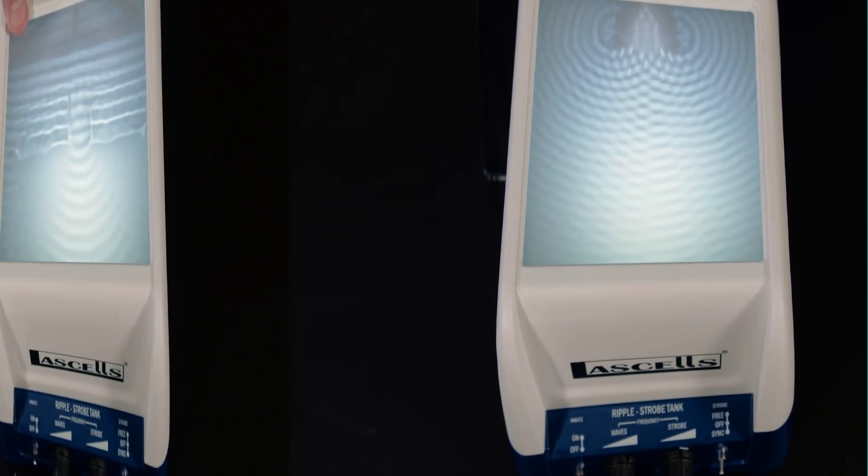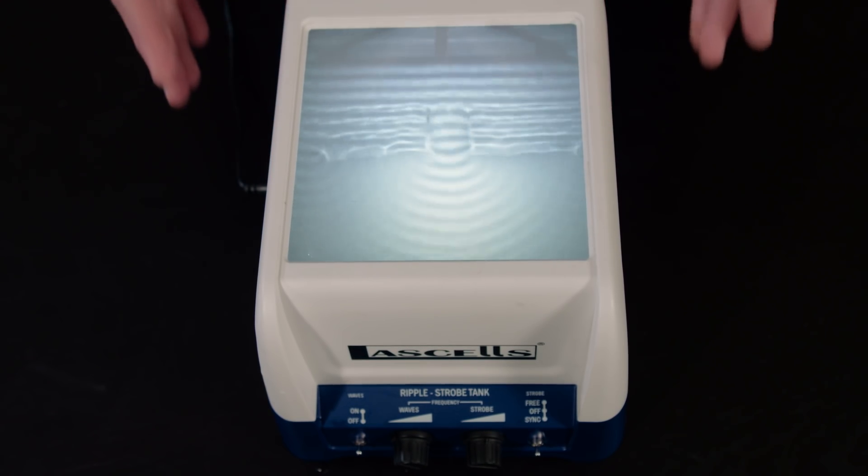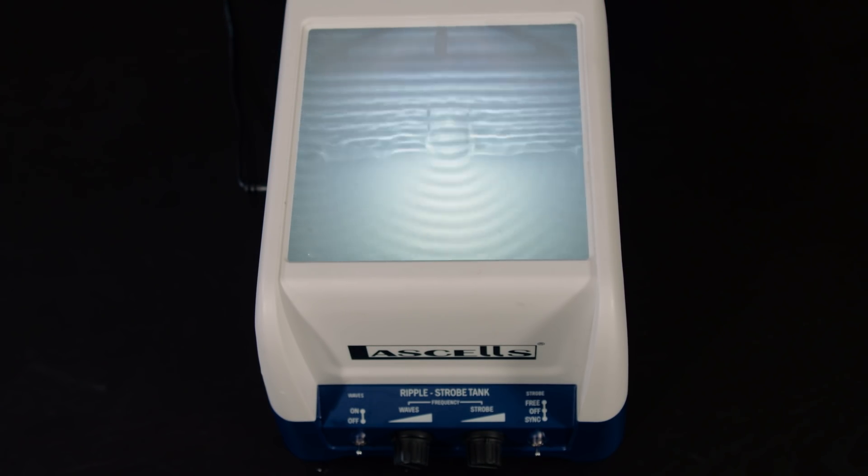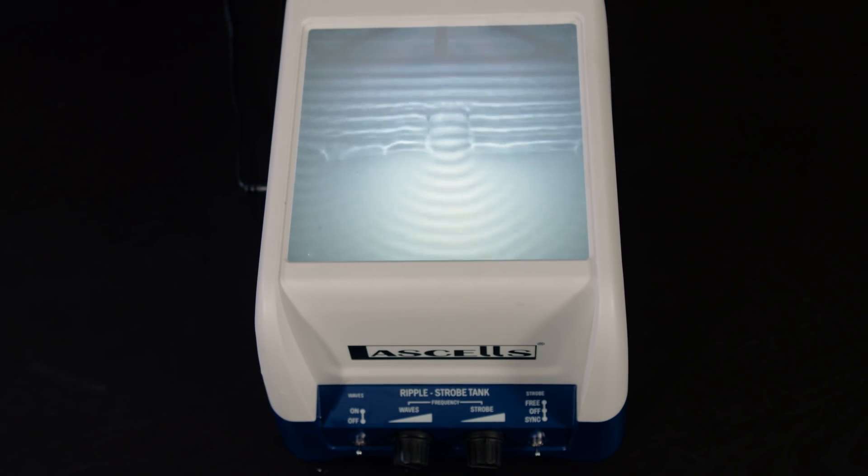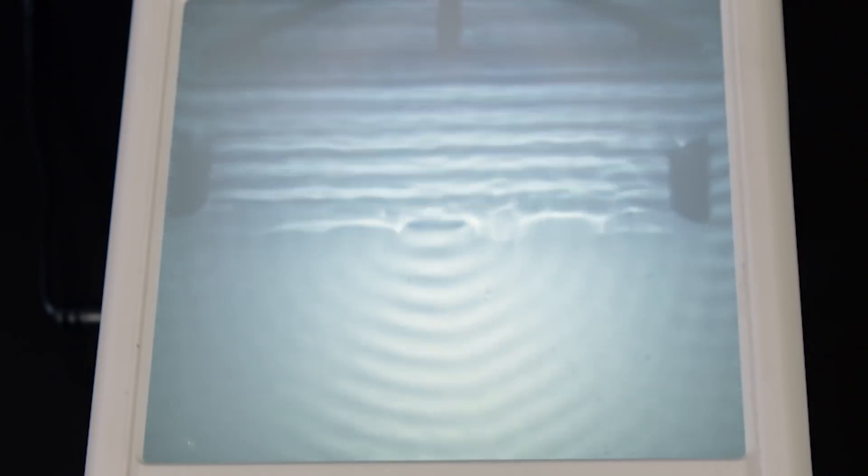Going back to the plane wave source, we can also use the barriers to demonstrate single-slit diffraction. When a wave passes through a small opening, it changes direction or diffracts. If you look carefully, you can even see single-slit interference.